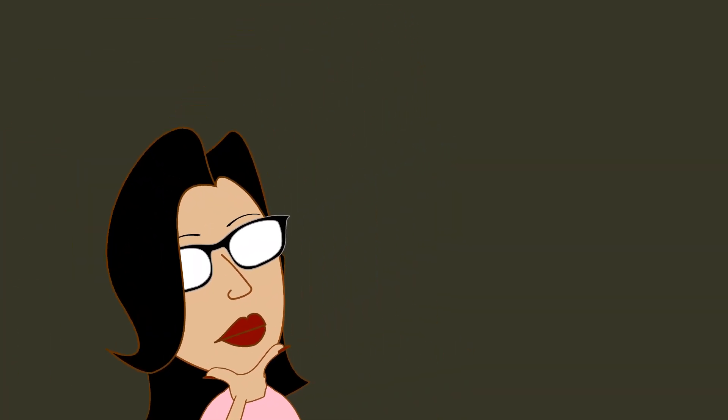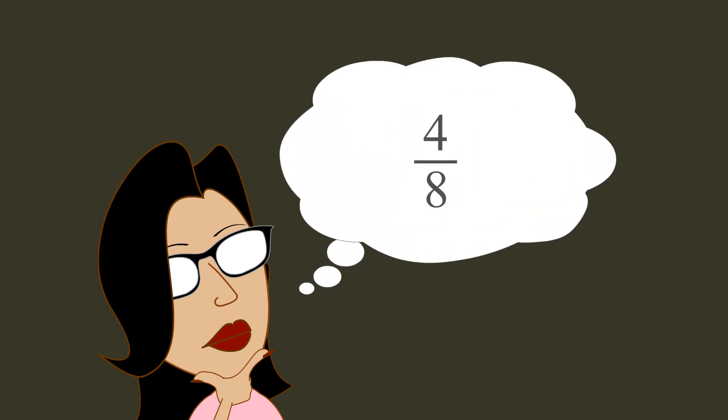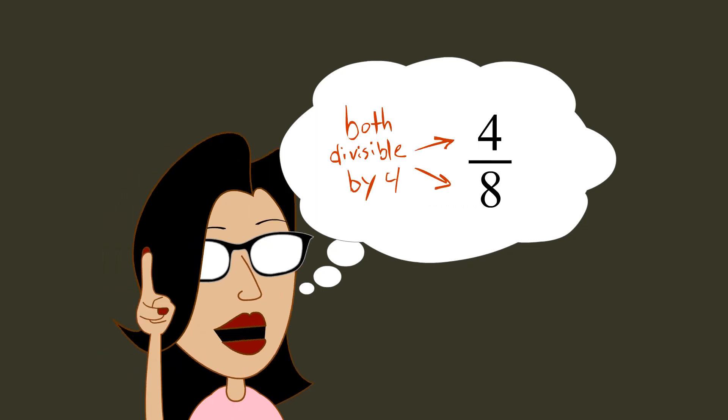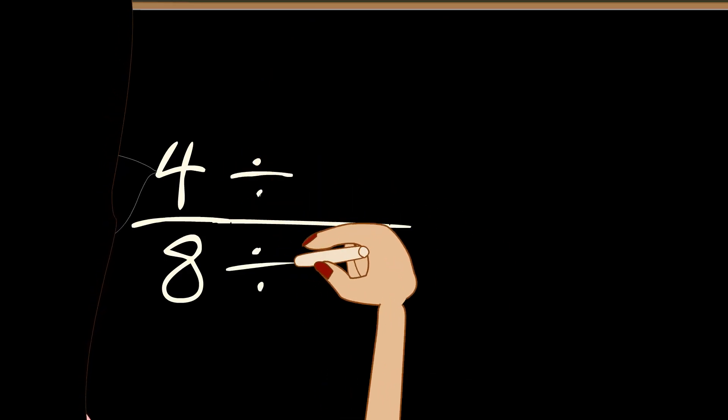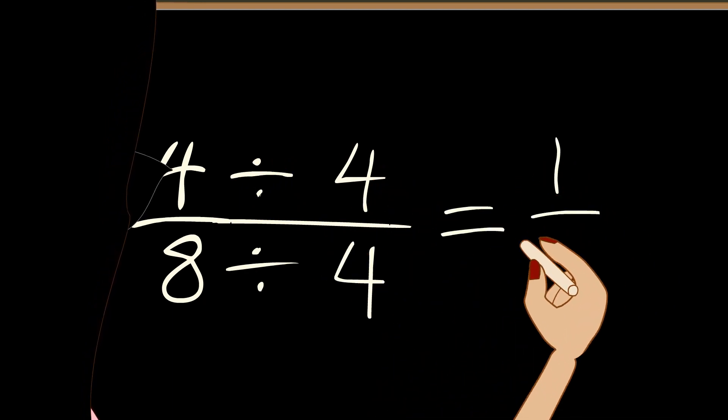Sometimes it is obvious. If we look at the fraction four-eighths, it is easy to recognize that the numerator and denominator are both divisible by four. And so, this fraction can be written as one-half.